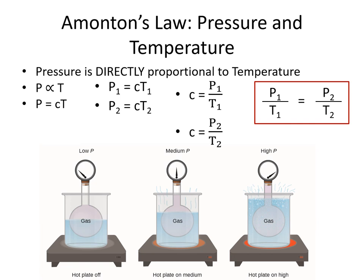Looking at the picture, we have a hot plate that is off and the pressure is low for the gas. When the hot plate is on medium heat, the pressure is about medium. When the hot plate is on high, the pressure is high. As the temperature went up, the pressure went up — they're directly proportional.